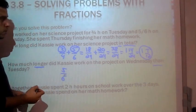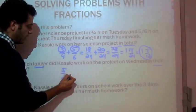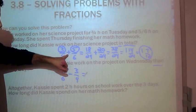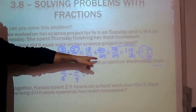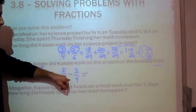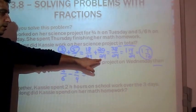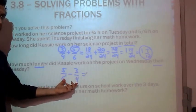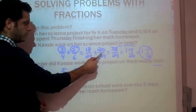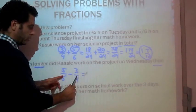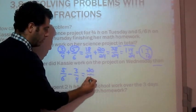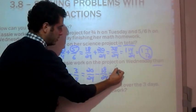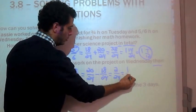Let's take the amount of time she spent on Wednesday — 5 sixths of an hour — and subtract 3 quarters of an hour, which is the amount she spent on Tuesday. Like addition, when you subtract you need common denominators, because subtraction and addition are inverse operations. Using the same values as before, 20 over 24 minus 18 over 24 gives us 2 over 24, which simplifies to 1 twelfth.